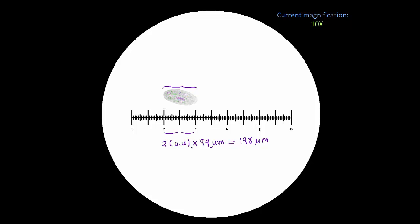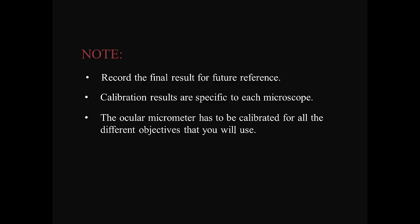This final result, which is one ocular unit equals 99 microns, is what you need to record in your lab notebook for future reference, if you're going to be using the same microscope later on. Note also that each microscope has to be individually calibrated, and you need to calibrate the ocular micrometer for each of the objectives that you're going to use. Let's get some more practice.